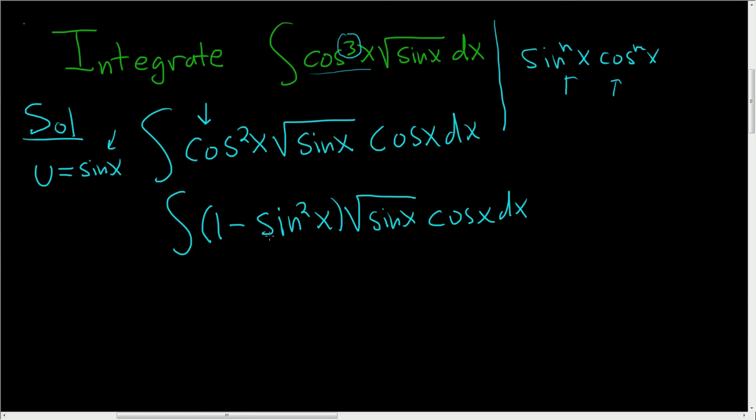Let's go ahead and make the substitution now. You can keep simplifying here, but it's better to just make the substitution. So du here is cosine x dx. The derivative of sine is cosine.